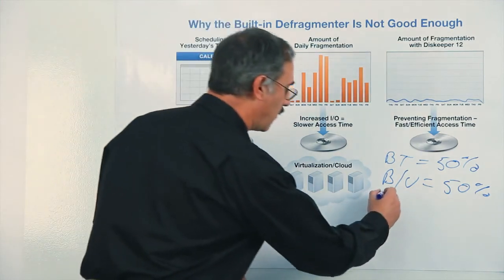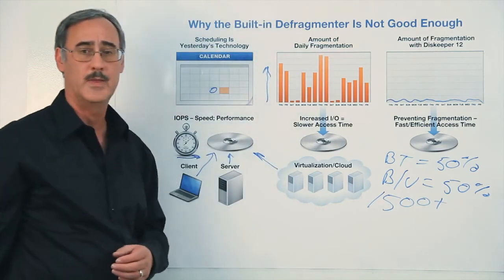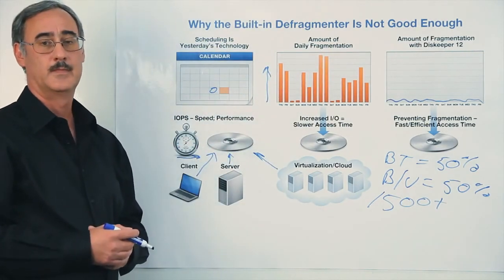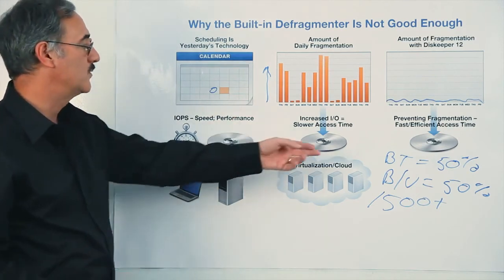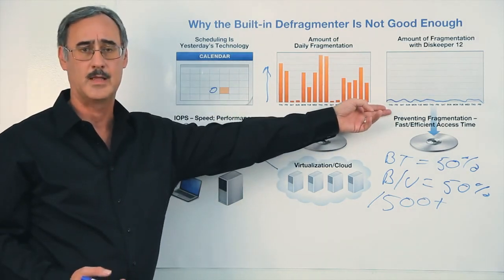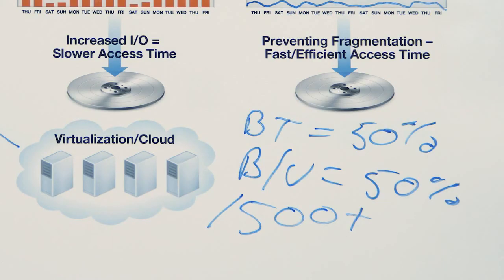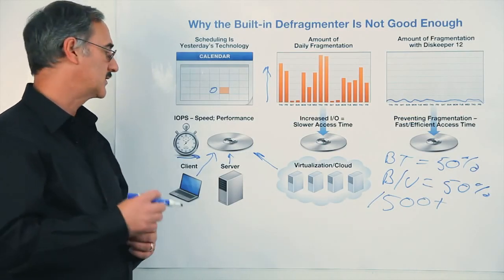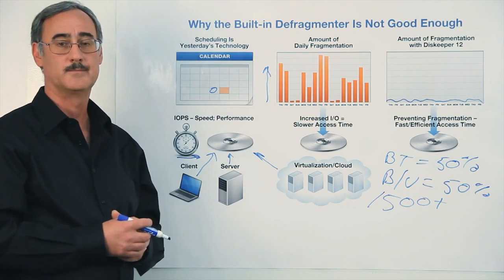they saw a whopping 1,500-plus percent improvement in disk I/O responsiveness and reduced elapsed time. That's clearly a reason why you want to prevent fragmentation from happening as opposed to attempting to fix it — that's a day late and a dollar short. Proactive prevention of fragmentation is the key to successful operations and improved response time to users.